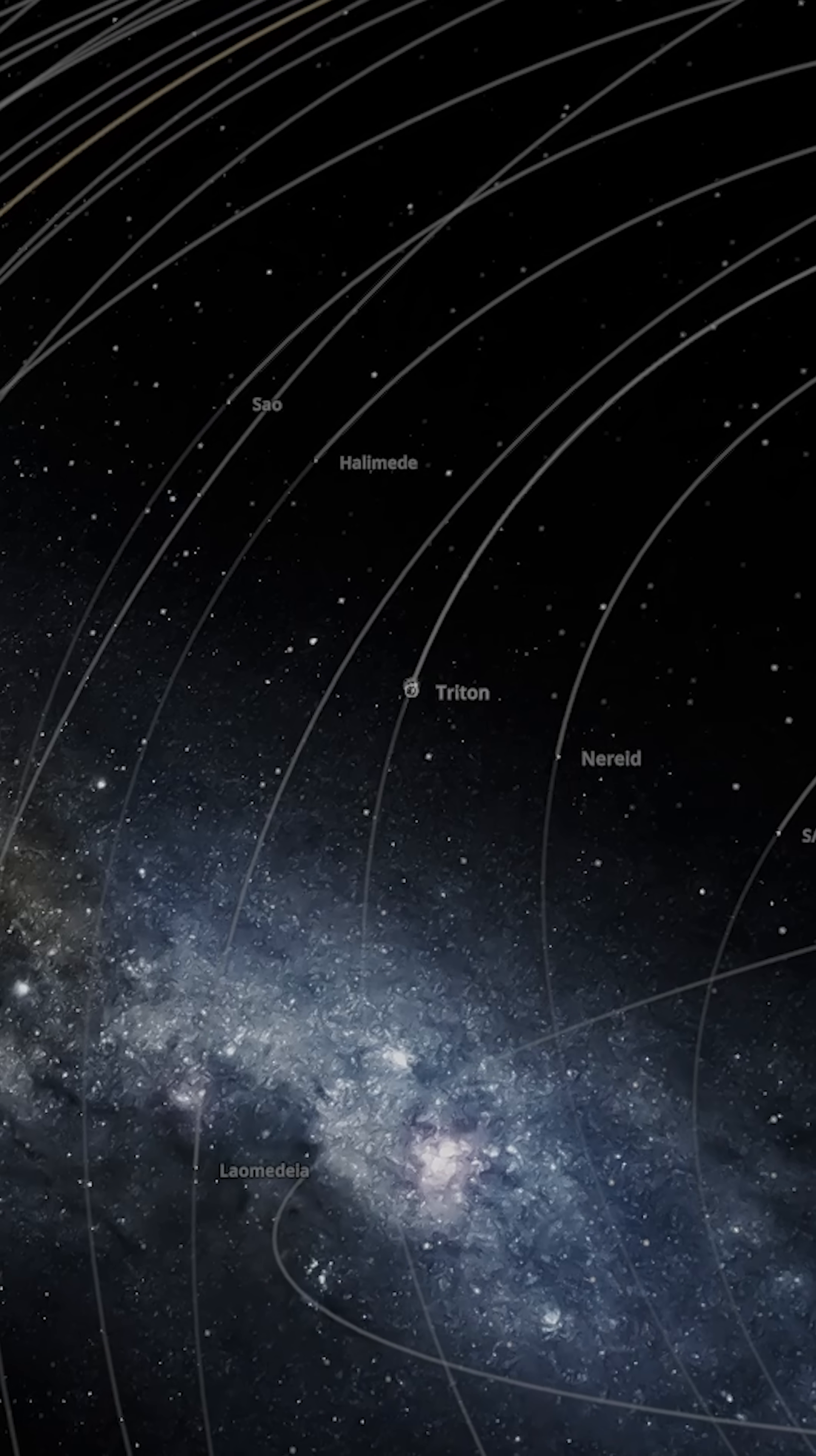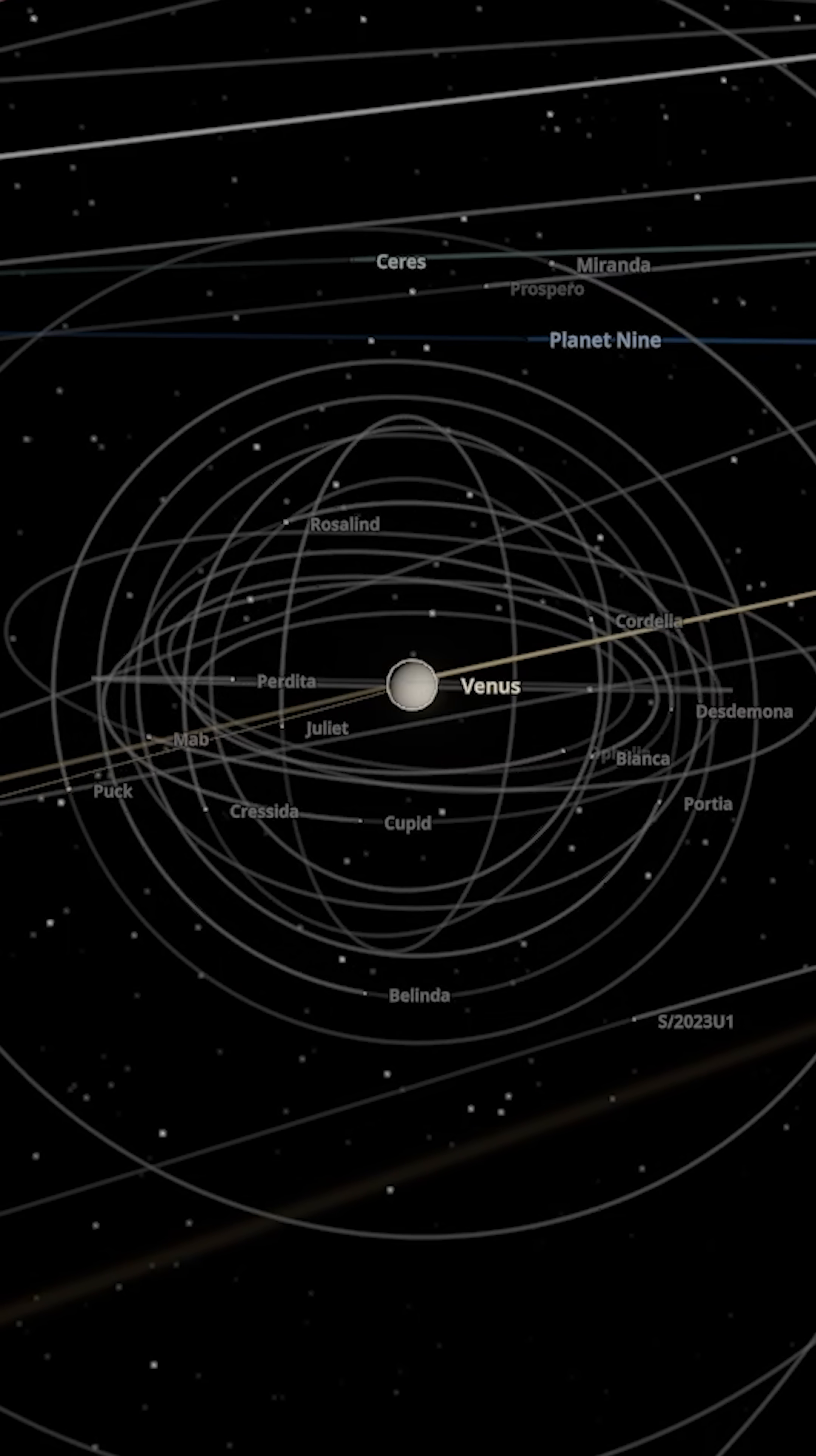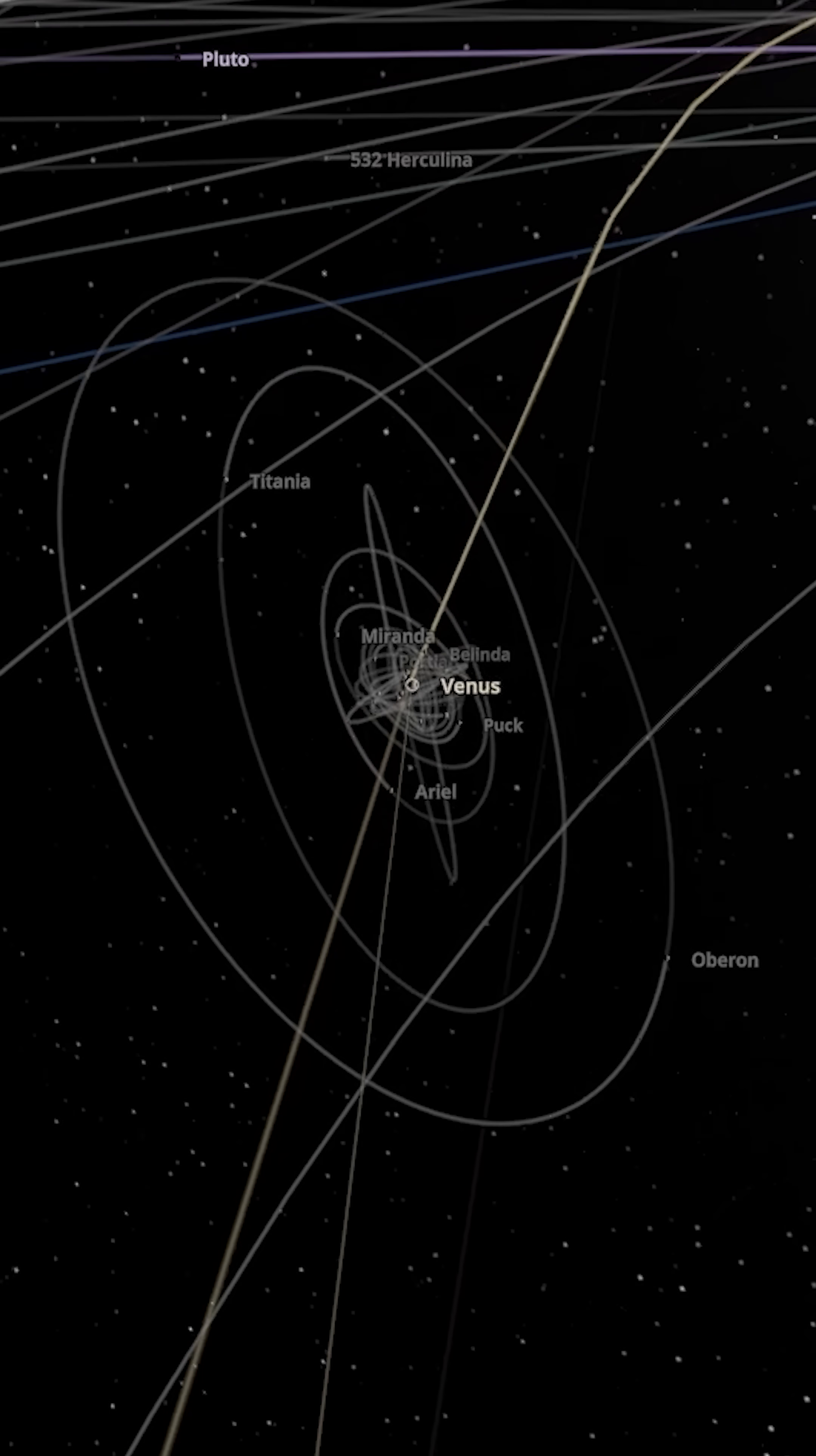Venus with the Uranian system. Can Venus hold on to those? Possibly. I have high hopes for Venus here because none of Uranus's moons are that large. We've got Miranda, Ariel, Umbriel, Titania and Oberon. Hopefully Venus can hold on to those. I'm hoping it will. I think that'd be quite cool.